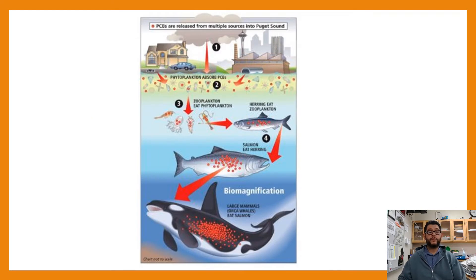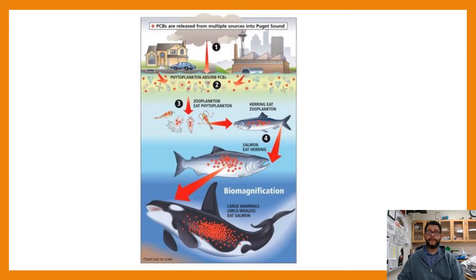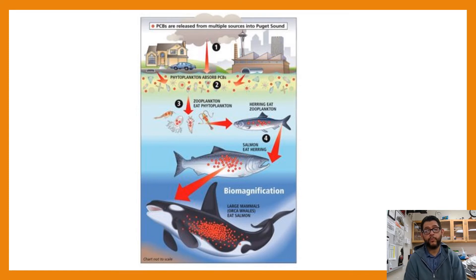Looking at this diagram, the PCBs are being released at the top in very tiny amounts — those red dots are spread out everywhere. Then they get to our zooplankton and phytoplankton, and those end up getting larger and larger quantities. Our herring and salmon get even more, and by the time we get to large mammals like whales, or even tuna — things that eat salmon — that ends up making a really massive amount.